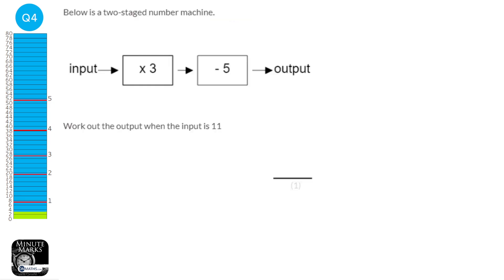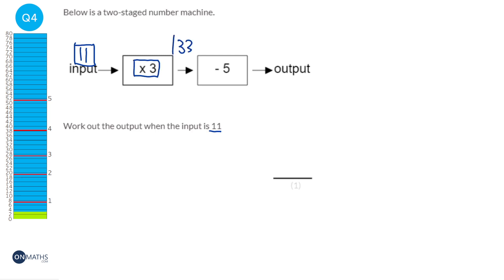We're going to use a function machine to find out the output when we've got an input of 11. We put 11 into the machine and the first thing that happens is we multiply it by 3. So out of that first machine we're going to have 33, which is 11 times 3. Then the next part of the machine is going to take away 5 from that. So 33 take away 5 is going to be 28. So our output is going to be 28.